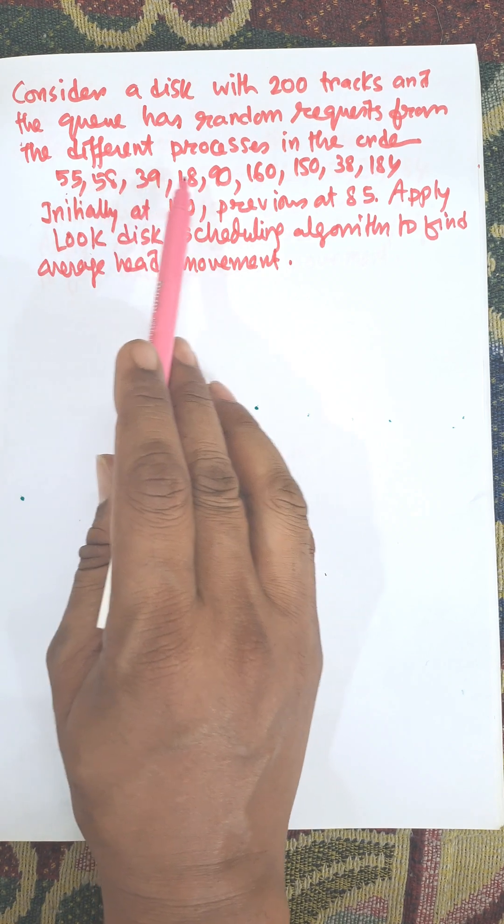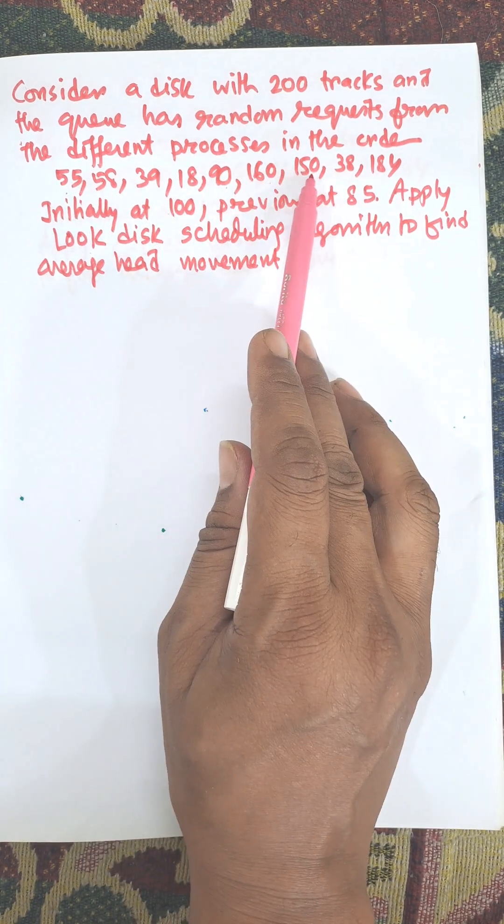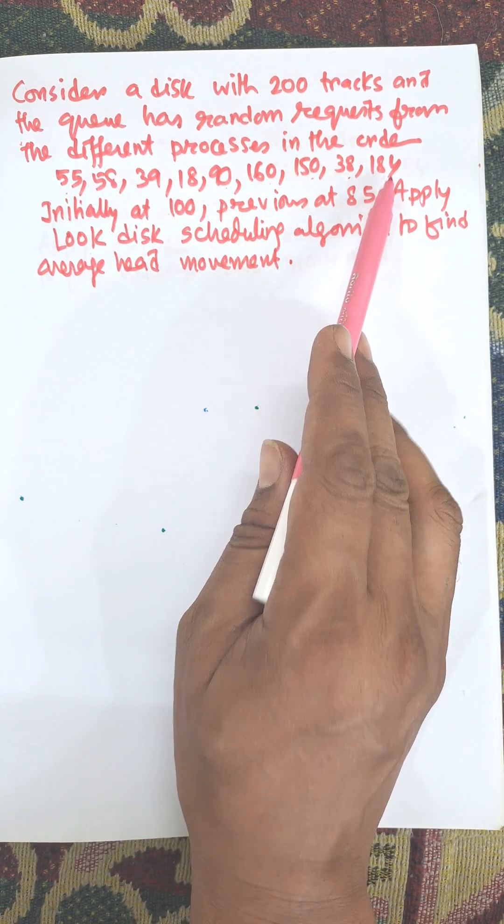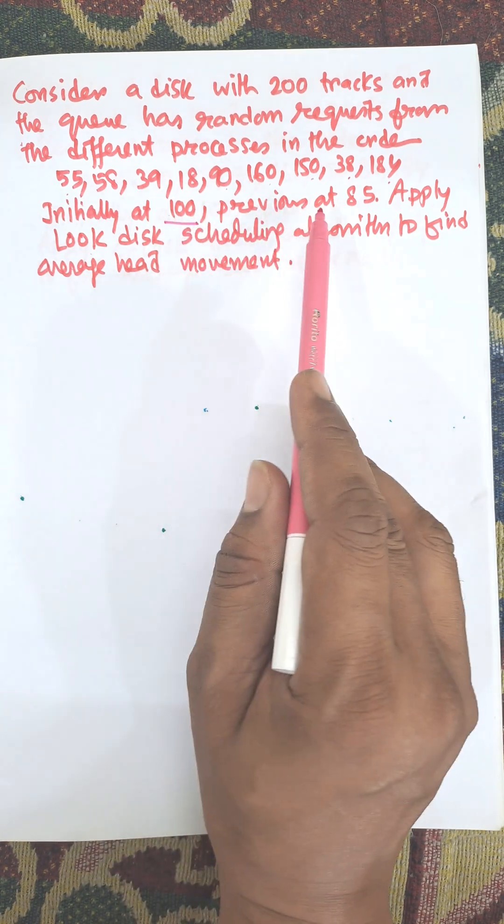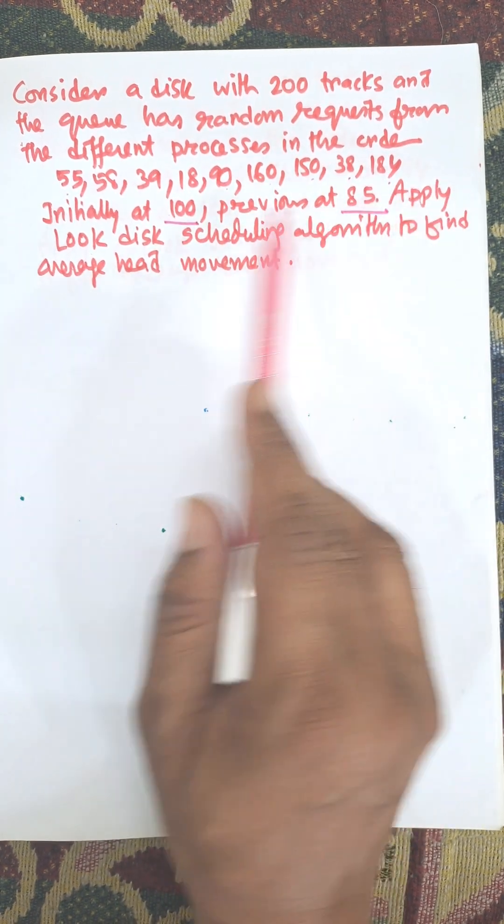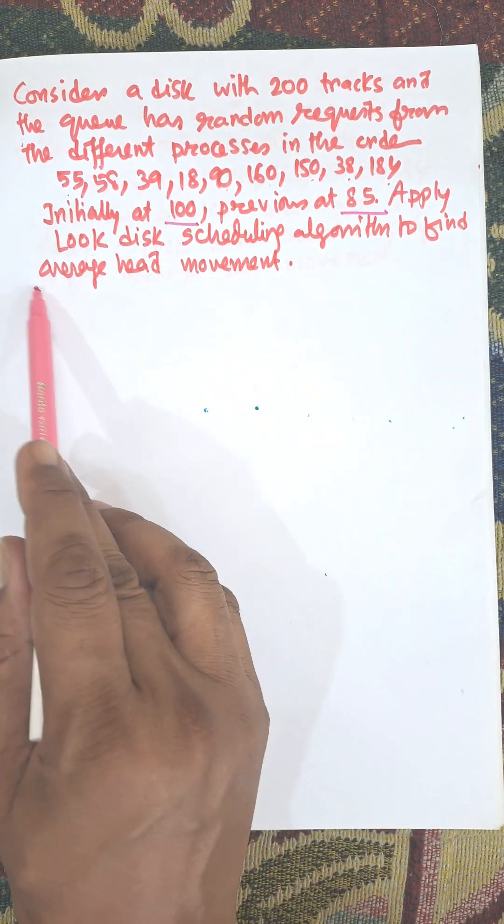In the order 55, 58, 39, 18, 91, 61, 50, 38, 184. Initially at 100, previous was at 85. Apply disk scheduling algorithm to find average head movement.